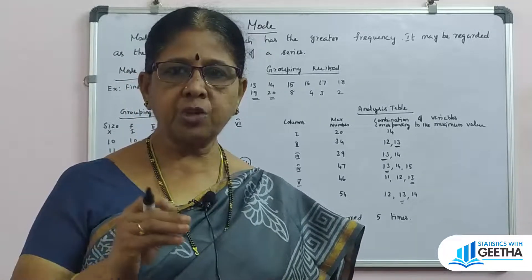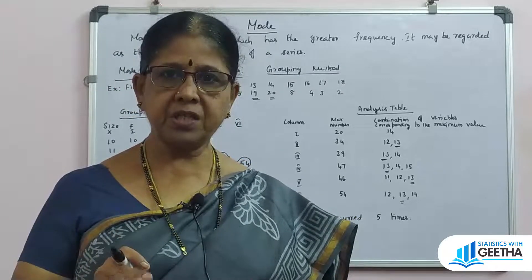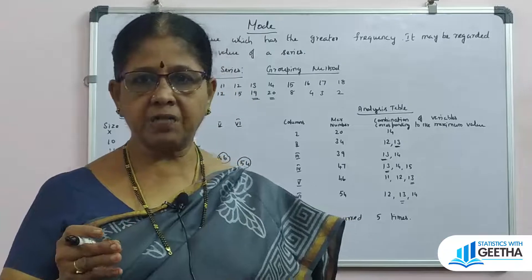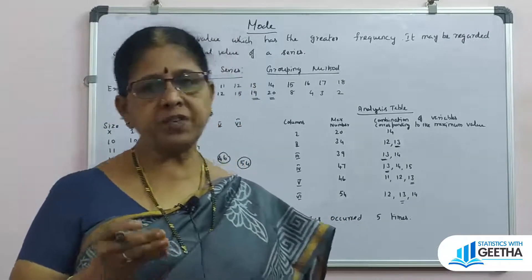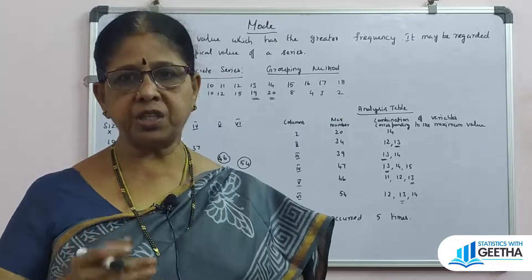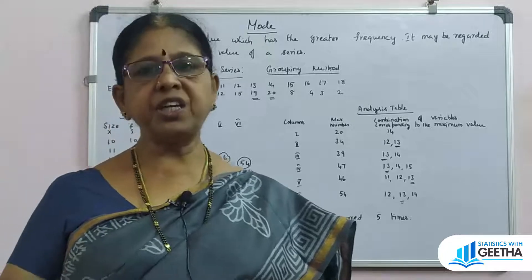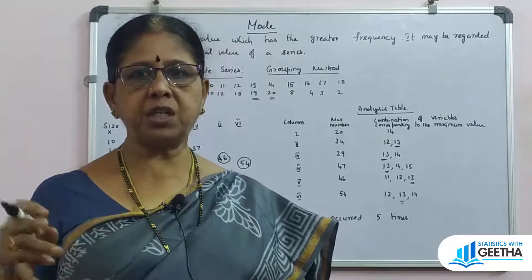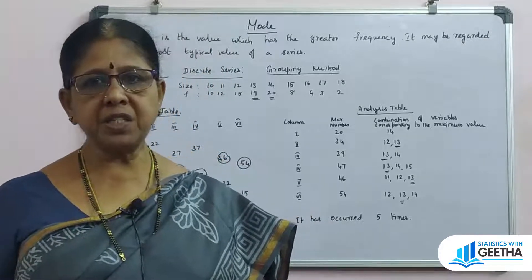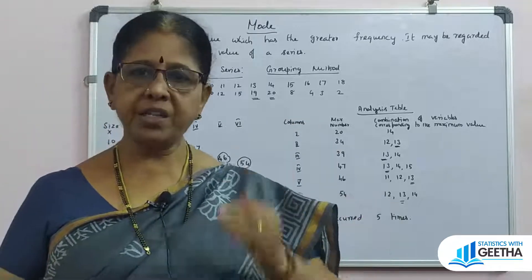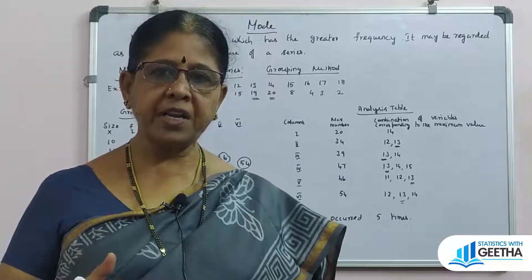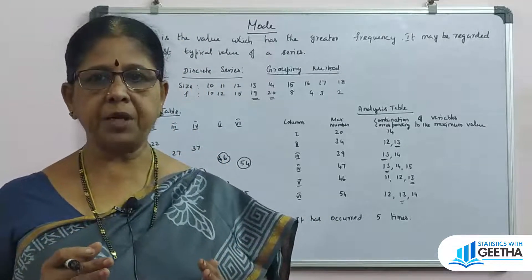For example, if the maximum frequency is 20 and a nearby frequency is 19, there is very little difference, making it hard to identify the mode confidently. Also, if the maximum frequency occurs at the beginning or end of the distribution, there is further confusion. In these situations, we go to the grouping method.